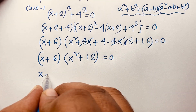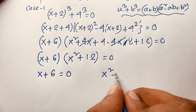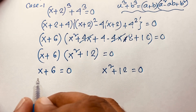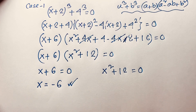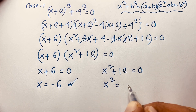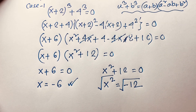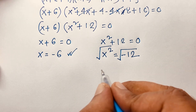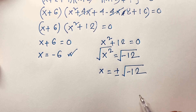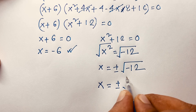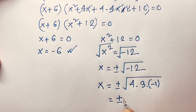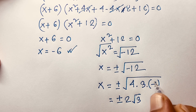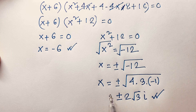From (x + 6)(x² + 12) = 0, we get two sub-cases. First: x + 6 = 0, so x = −6. This is our real solution. Second: x² + 12 = 0, so x² = −12, giving x = ±√(−12) = ±√(4 × 3 × −1) = ±2√3 · i. So x = +2√3i and x = −2√3i are the complex solutions from Case 1.